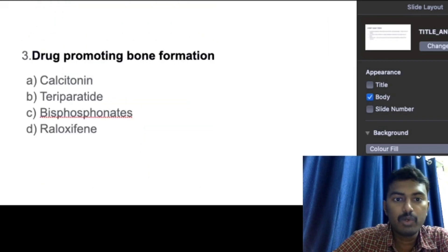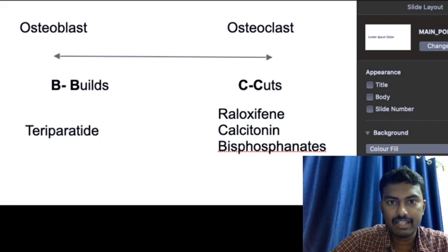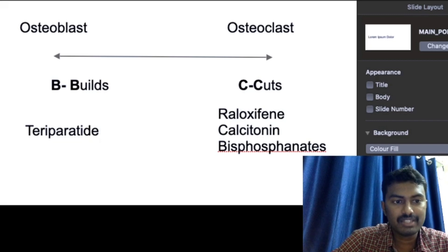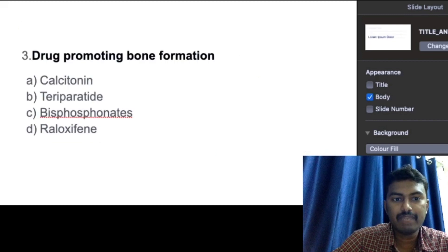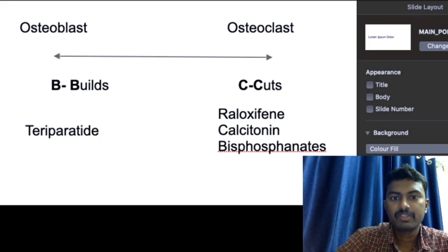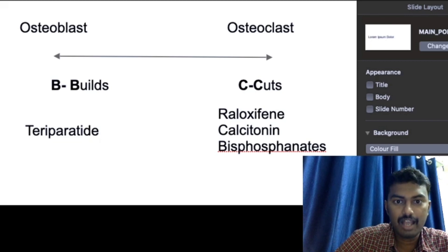The third question is about drugs promoting bone formation. There are two key bone cells: osteoblast (builds) and osteoclast (cuts/resorbs). Teriparatide, an analog of parathyroid hormone, acts on osteoblasts and is the only drug directly responsible for bone formation. Raloxifene, calcitonin, and bisphosphonates indirectly prevent bone loss by inhibiting osteoclast activity.